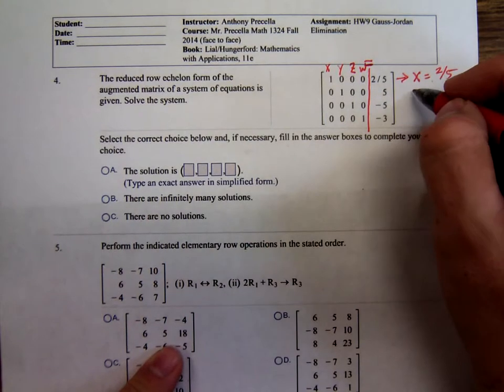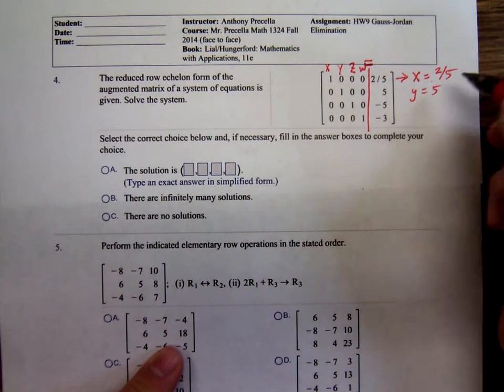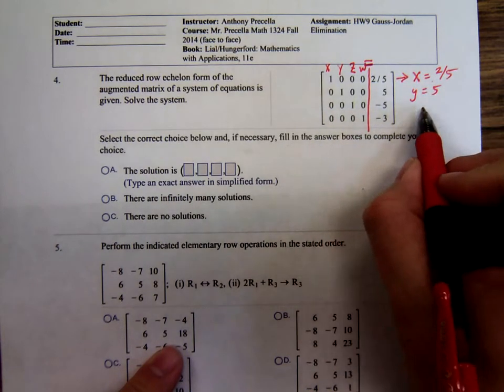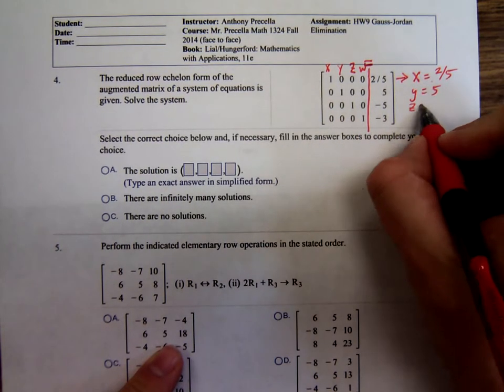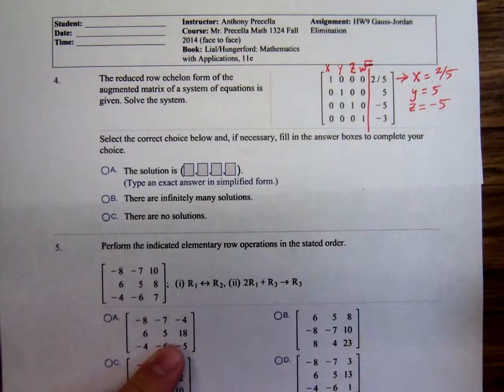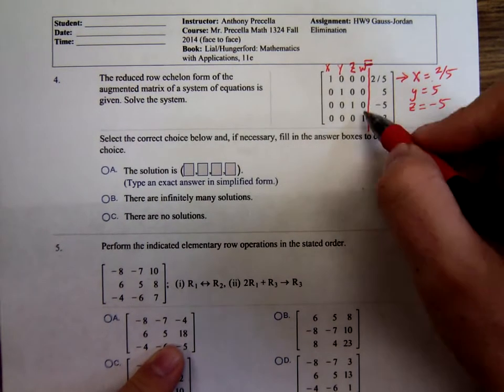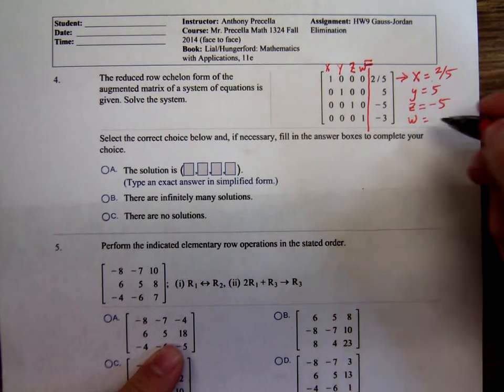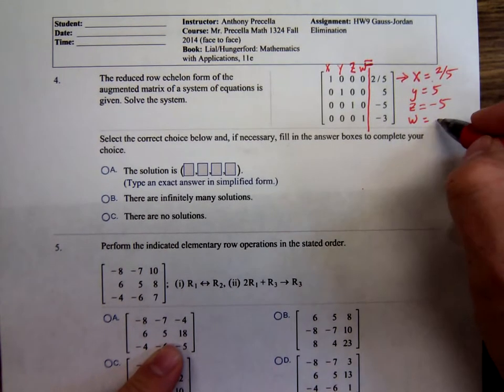y equals 5, or just y equals 5. And the third equation? z equals negative 5. And I guess the letter I chose for that fourth column, w, is what? Negative 3.